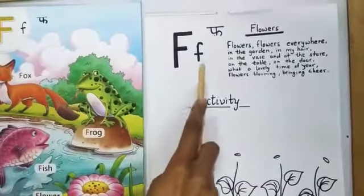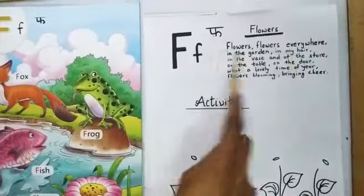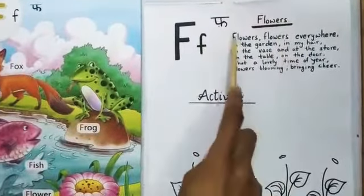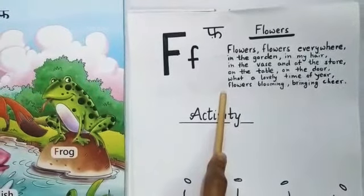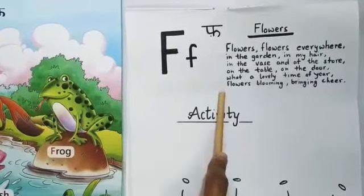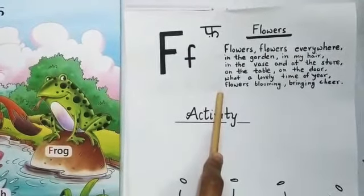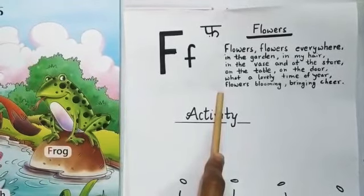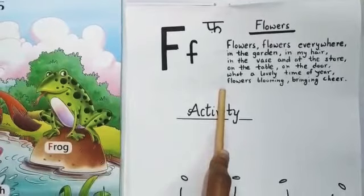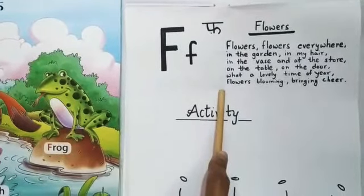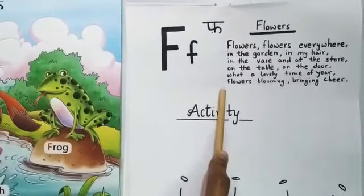F, F says Fah. Fah se hum karenge Flower wali rhyme. Flowers, flowers everywhere. In the garden, in my hair. In the vase and at the store. On the table, on the door.